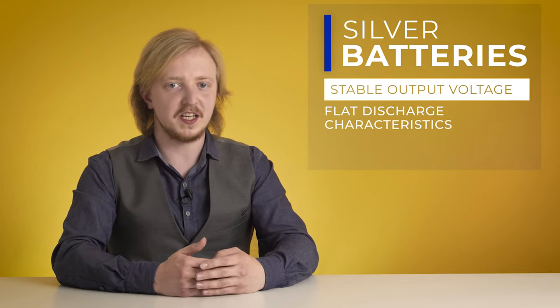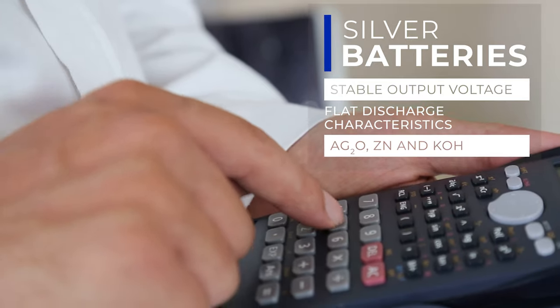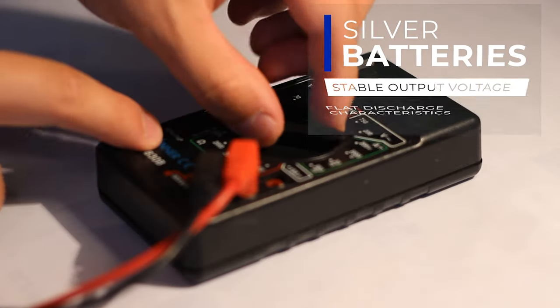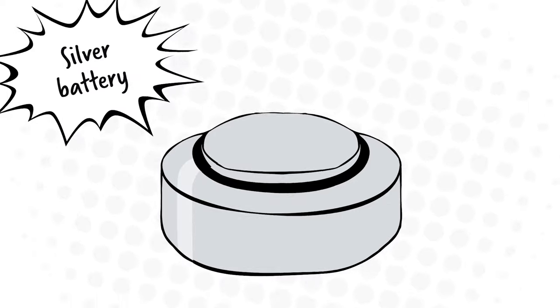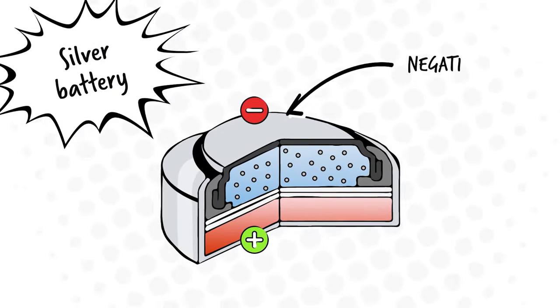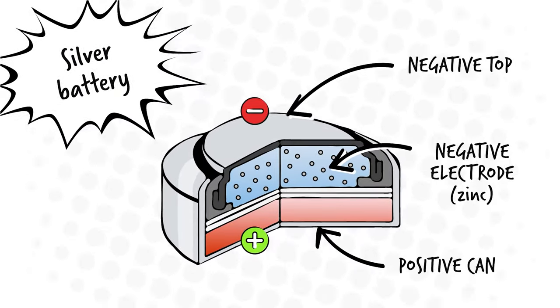Some devices require stable output voltage and flat discharge characteristics. For example, pocket calculators, wristwatches or multimeters. And if you want them to work, you need to pay with pure silver! Well, silver oxide to be more specific. Button batteries, because that's what I'm talking about, are most commonly based on combination of silver oxide cathode and zinc anode with potassium hydroxide electrolyte. Keep in mind that in opposite to penlight batteries, here the flat side is positive. In case you forgot, there is always a symbol on one side.